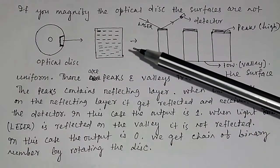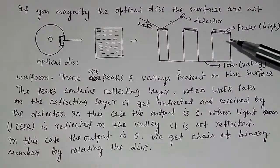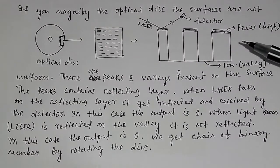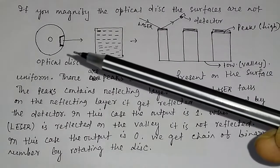We get zero, one, that is the binary numbers by rotating the disk.